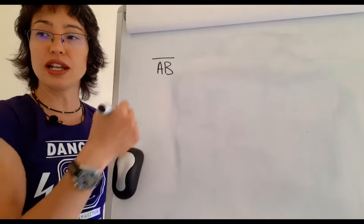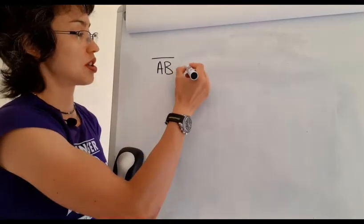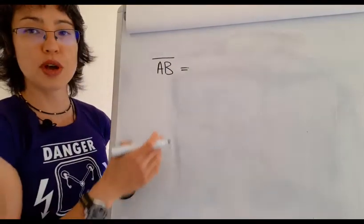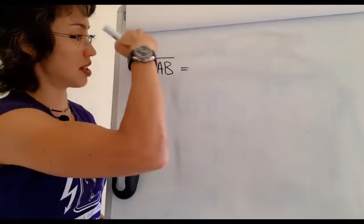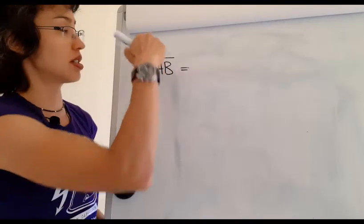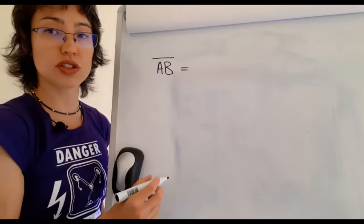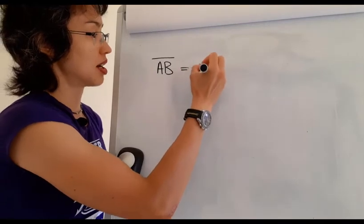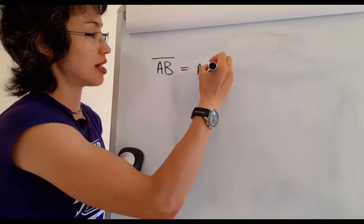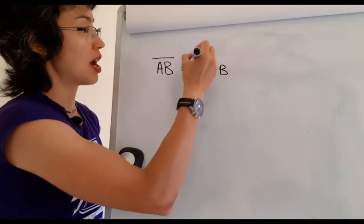In De Morgan's Laws you can use the term break the line, change the sign. That means that A AND B, they're NOTted, so the whole thing is NOTted so you have a line across the top. If I break the line, I change the sign. So I've gone from an AND here and I go to an OR and I break the line so the line here is now broken.